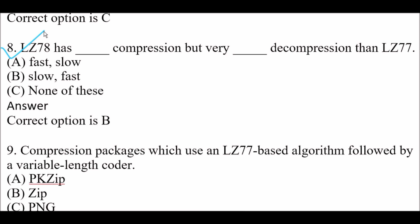Next question: LZ78 has blank compression but very blank decompression compared to LZ77. Option A: Fast and slow respectively. Option B: Slow and fast respectively. Option C: None of these. The right answer is Option B — slow and fast. LZ78 has slow compression but very fast decompression compared to LZ77.